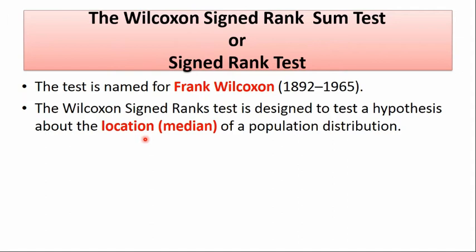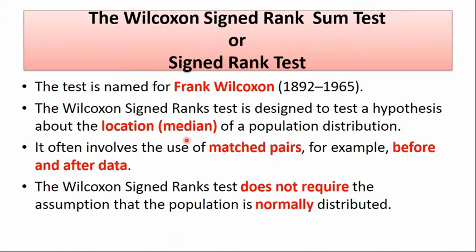The Wilcoxon sign rank test is designed to test a hypothesis about the location. It does not use mean — it uses median or population distribution. It often involves the use of matched pairs, for example before and after cases: before joining gym, after joining gym, before training, after training. The Wilcoxon sign rank test does not require the assumption that the population is normally distributed.